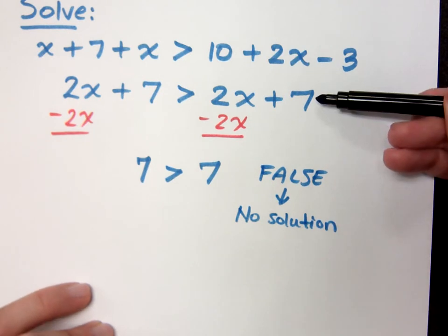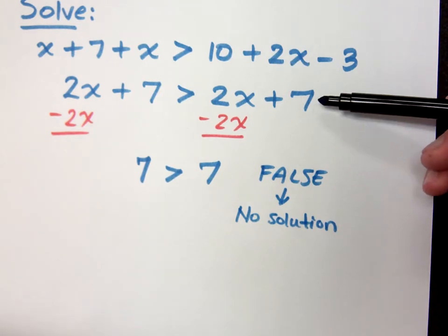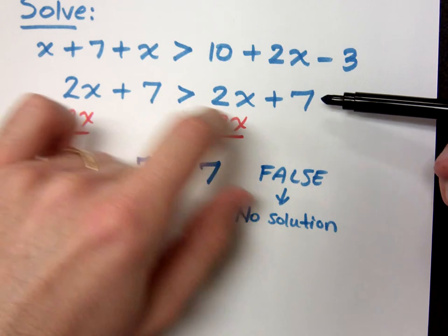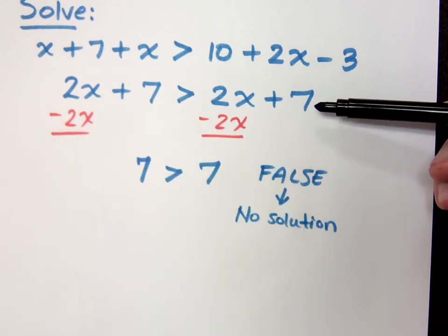What that means is that back up here, there is never a value of x where 2x plus 7 is greater than itself. It's never going to be greater than itself.